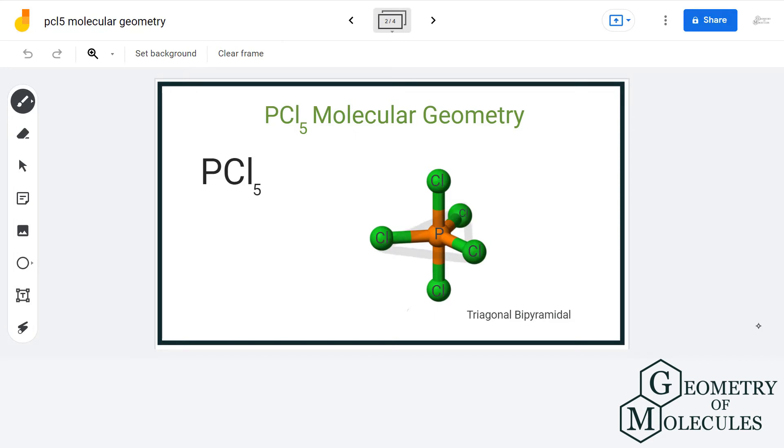This is the trigonal plane and there are two chlorine atoms perpendicular to this plane, so we name it bipyramidal. These three particular bonds are at an angle of 120 degrees to each other, and these two chlorine atoms are at 90 degrees to this plane.